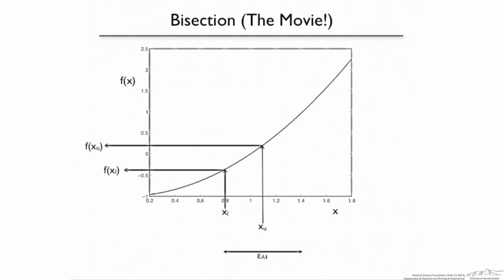So we can get rid of the upper bound, and now our guess has turned from xr — our guess for the root — into an upper bound. The approximate error has been cut in half, because now we know that our function value is somewhere between these two bounds. So in one step, we've cut the error in half.